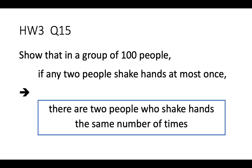But there is a clever observation. If a certain person shakes hands zero times, it means every other person cannot shake hands with that person. So for all other people, the handshaking count can only range from 0 to 98 — nobody can have 99. So there are only 99 choices. With 100 people and 99 choices, two people must have the same handshaking number.